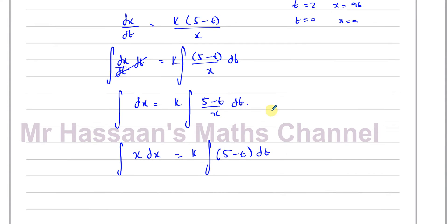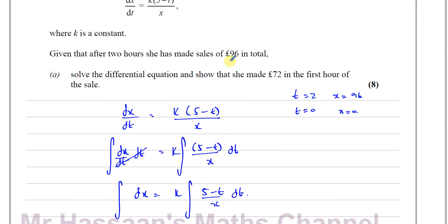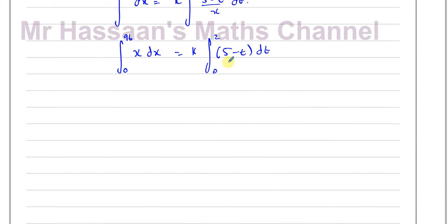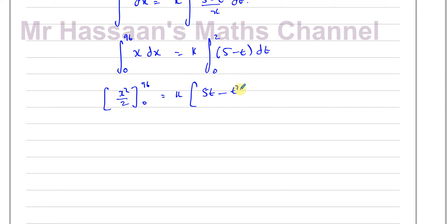Now I need to find the value of k. I can use the known values: when x = 0, t = 0, and when x = 96, t = 2. Using those as limits I'll be able to find k directly without writing plus c. Integrating both sides: on the left I have x²/2 evaluated between 96 and 0, and on the right I have 5t − t²/2 evaluated between 2 and 0.